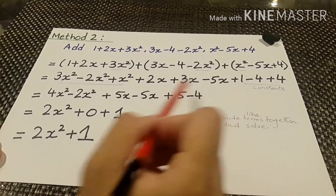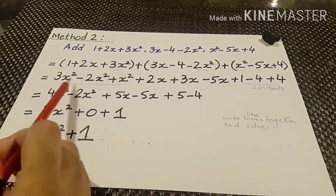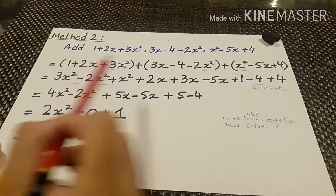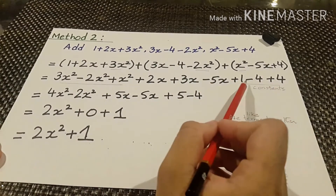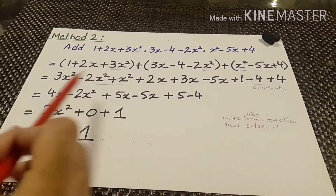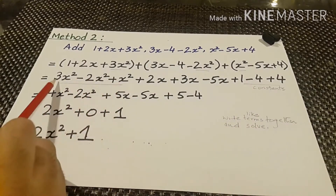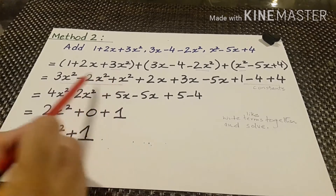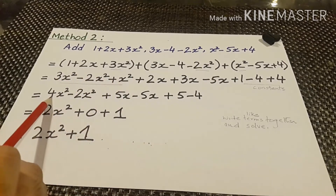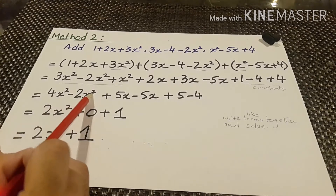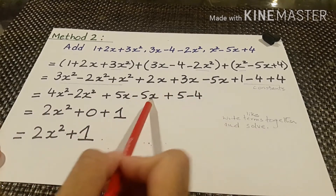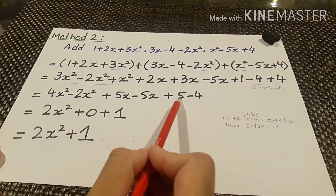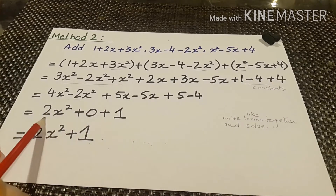We arrange like terms together — like terms of the three polynomials. Here the variable has power 2, here the variable has power 1, and this is the constant or the variable with power 0. Now we will solve them: 3 plus 1 is 4, minus 2 gives us 4x squared minus 2x squared.